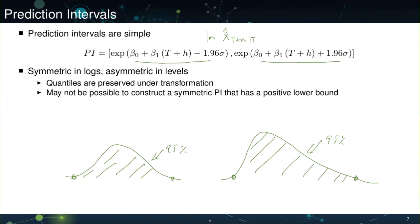Of course this will not be a symmetric distribution. It will be asymmetric in the levels. Of course it's symmetric in the logs because it's normal. It's asymmetric in the levels. But it's not always possible to construct a symmetric prediction interval for the level when you use a log model, at least one that has a positive lower bound.